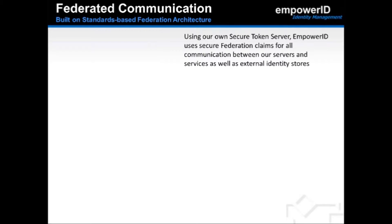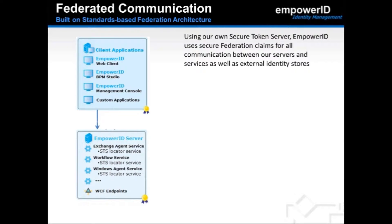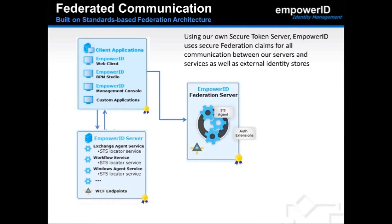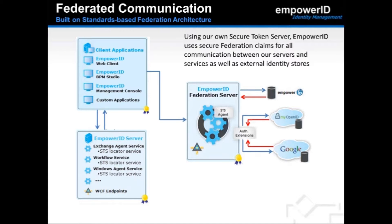Not only does EmpowerID provide federation with external applications and account stores, our own communication architecture is based on federation claims processing. Using our own integrated secure token server, EmpowerID uses secure federation claims for all internal communication. When a client application wants to communicate with EmpowerID — through our web pages, WPF client, or an API call — the server directs the request to our STS server for a claim token. The STS server presents credentials to the appropriate identity provider for authentication, then generates the claims token and passes it back to the requesting application for all further communication.